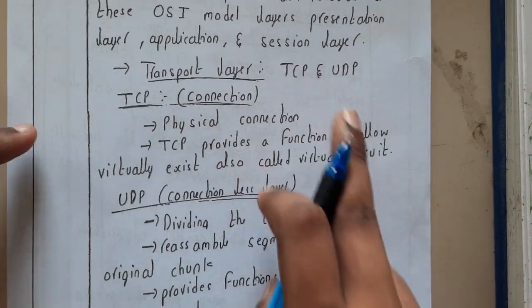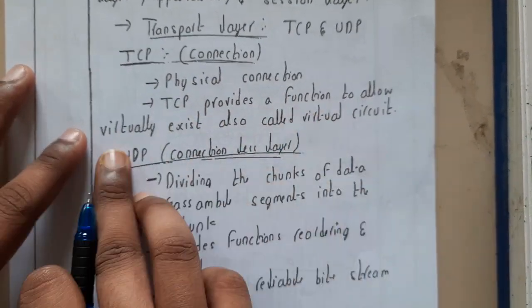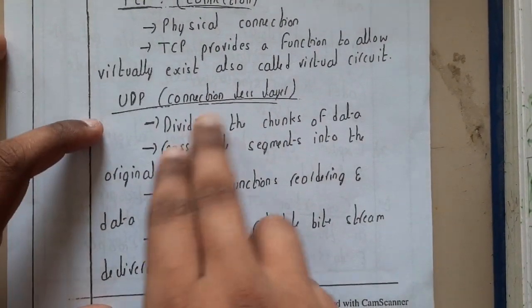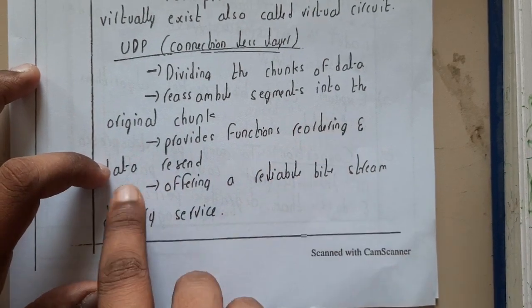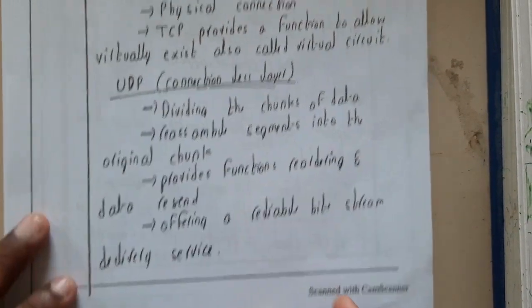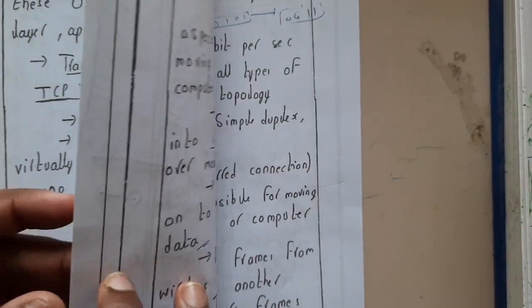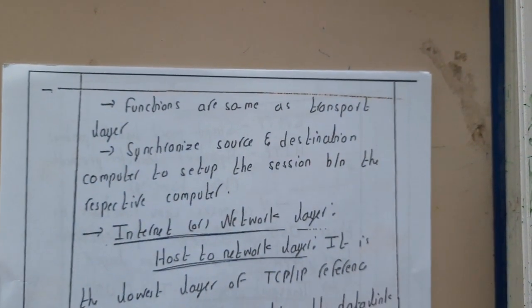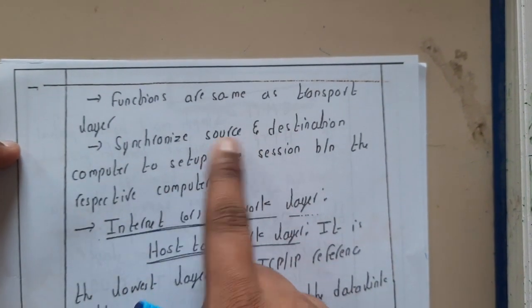In the Transport layer we have two types of communication: TCP and UDP. TCP is wired communication providing physical connection and allows virtually existing virtual circuits. UDP is connectionless — it divides chunks of data, reassembles them, segments them into original chunks, and provides reordering and data resending functionality. Because UDP is wireless, you need to take multiple precautions while transmitting data, as delivery to the destination is not guaranteed.